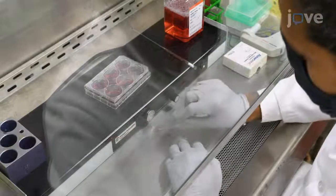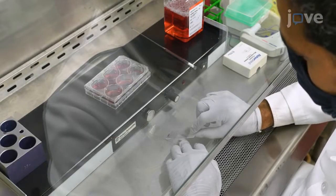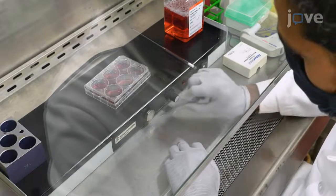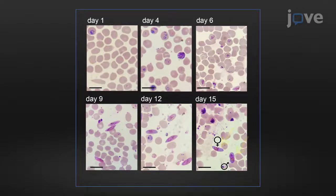To quantify mature gametocytemia on day 15 to 18, make a blood smear and count the number of mature gametocytes in a minimum of 1,000 red blood cells to allow calculation of the percentage of mature gametocyte-infected red blood cells.